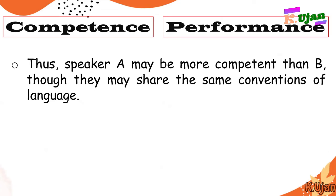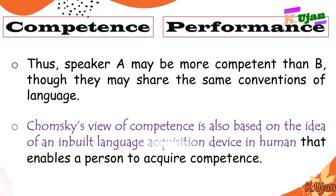Two individuals' competence may not be the same — there might be differences between them. Chomsky's view of competence is also based on the idea of an inbuilt language acquisition device in humans that enables a person to acquire competence. According to Chomsky, every individual has an inbuilt language acquisition device within the mind — a special capacity that gives the ability for language.